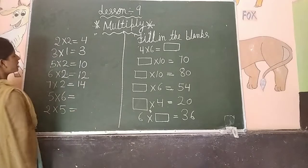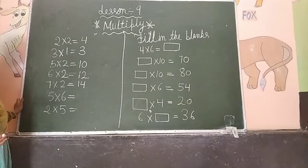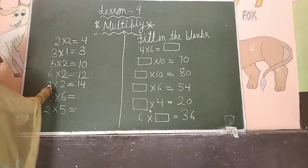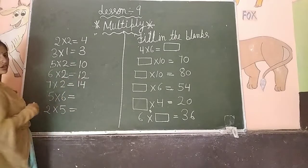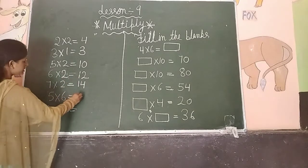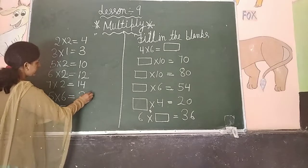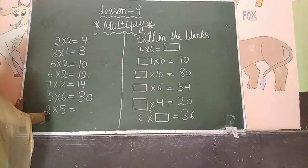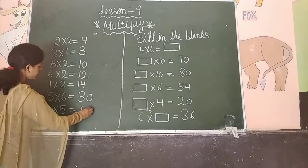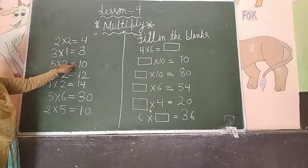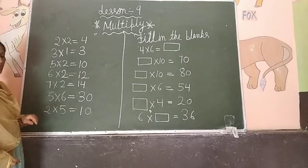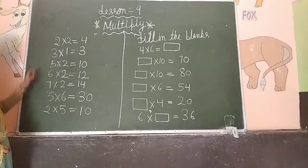So dear students, to solve these you must know your tables well — even from the middle. 7 twos are 14. 5 sixes are 30. Okay. 2 fives are 10. See, earlier we had 5 twos are 10, and here we have 2 fives are 10 — also 10. Okay.